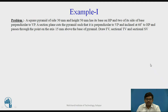Example: A square pyramid of side 30 mm and height 50 mm has its base on HP and two of its sides of base perpendicular to VP. A section plane cuts the pyramid such that it is perpendicular to VP and inclined at 60 degrees to HP, and passes through the point on the axis 15 mm above the base of the pyramid. We have a square pyramid whose base side is 30 mm, that is the base is a square of 30 mm side, and the height of the axis — the distance of apex from the base — is 50 mm.